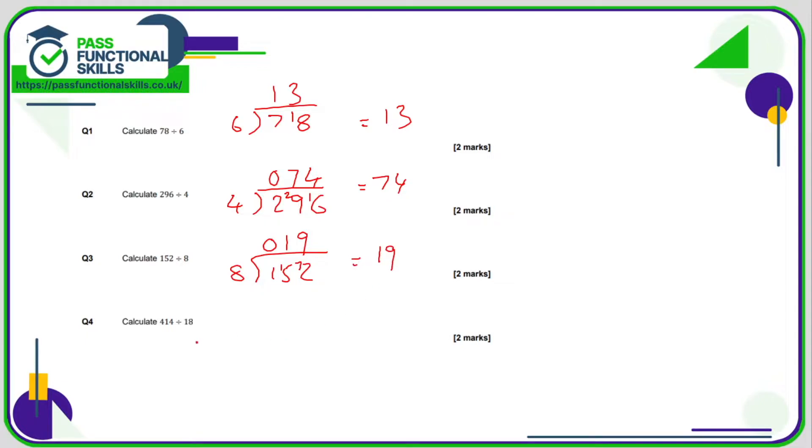414 divided by 18. Now this is quite a horrible one, so you could try and do it the normal way. How many 18's go into 4? None, carry the 4. How many 18's go into 41? Well, I know that 2 eighteens are 36 and 3 eighteens is greater than 41, so it's going to be 2. 2 eighteens are 36, and that's a remainder of 5. And 54 divided by 18, well I know from darts that triple 18 is 54, so the answer is 3. So the answer is 23.